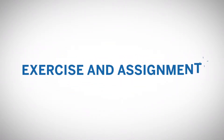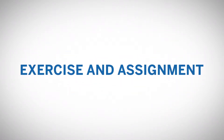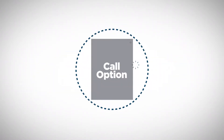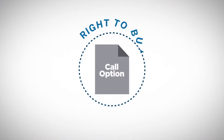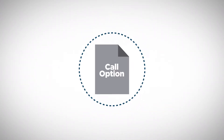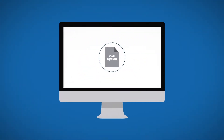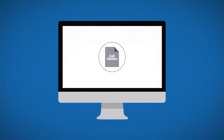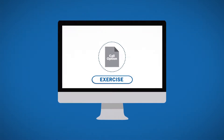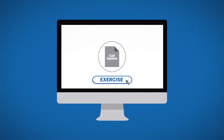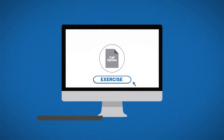What does it mean when an option is exercised or assigned? A call option is the right to buy the underlying future at the strike price. The process for activating that right is called exercising the right, or simply to exercise the option.